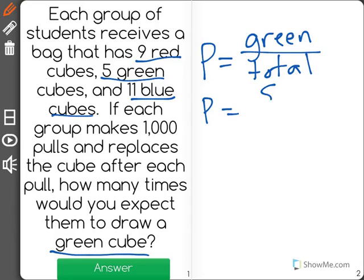We have 5 green cubes out of 11 blue plus 5 green plus 9 red, which is a total of 25. So the probability of pulling a green cube is 5 out of 25.